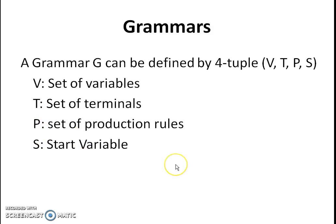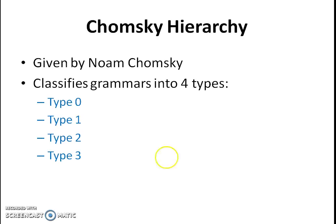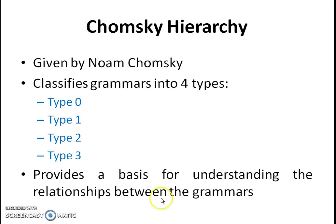We have different kinds of grammars, and there needs to be some classification among them. Noam Chomsky gave their hierarchy. Chomsky classified grammars into 4 types: Type 0, Type 1, Type 2, and Type 3. This classification gave a relationship between these 4 types of grammars.